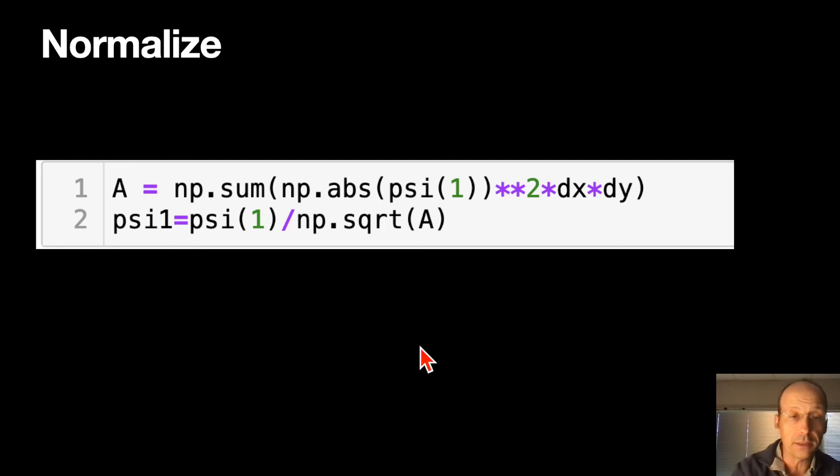I do need to normalize it. And this may not be the best way, but I did it anyway. So I went through. You can do the np.sum, which is really nice, even in two dimensions. So this takes the absolute value of psi squared, the first one, dxdy. And I did solve for dxdy before. And then I make a new function psi 1, which is just that function psi 1 divided by the square root of a. And that does it.